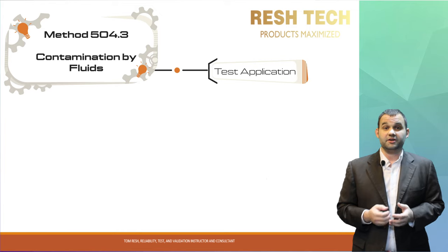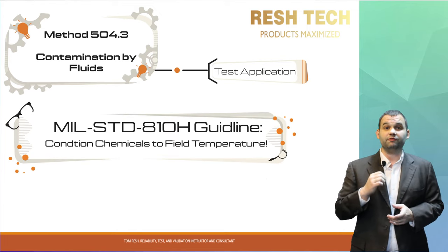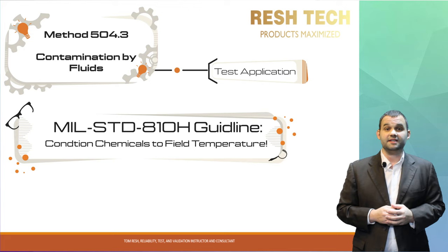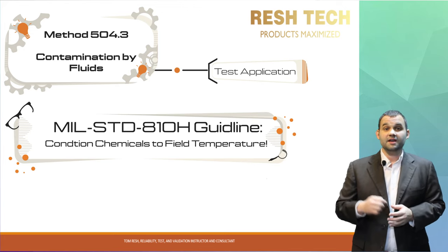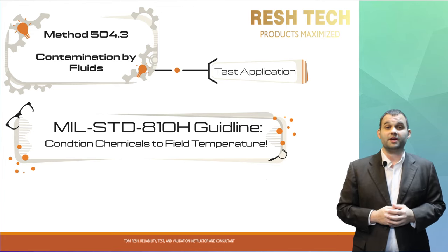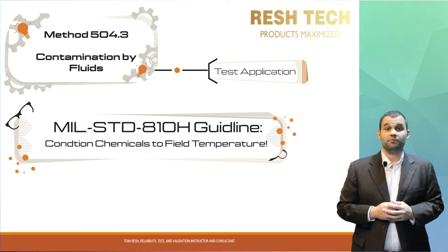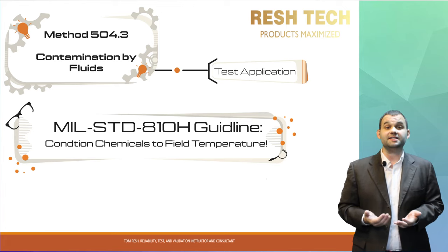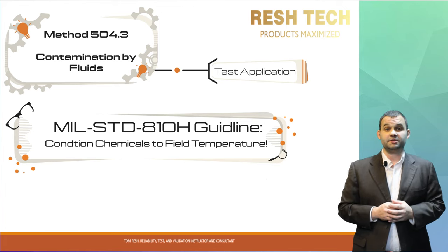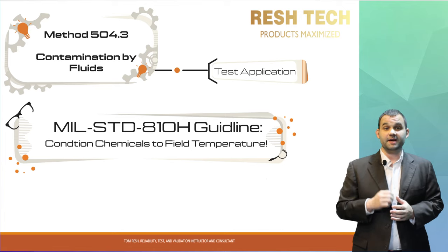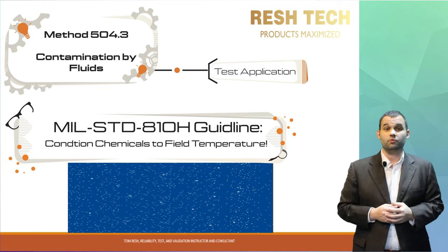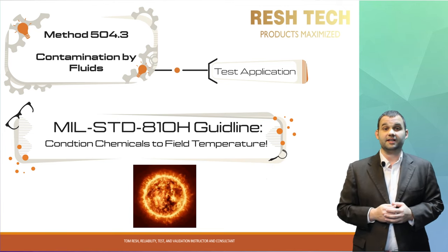MIL-STD-810H states as a guideline to have the fluid and system being tested saturated to the temperatures it would see in the field. This doesn't mean laboratory ambient temperature conditions — this means the ambient conditions you would see in the field. You should look at your mission profile and determine the actual ambient temperatures the system will be in when exposed to chemical contaminants. The fluid contamination event could happen in sub-zero or freezing weather conditions, or while the system is sitting in direct sunlight in a desert where the temperature could be over 50°C.